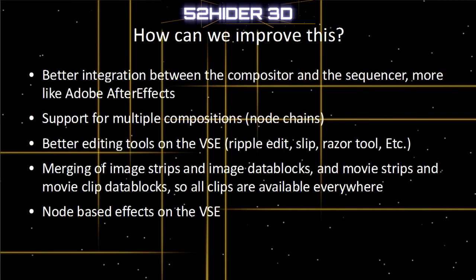Sorry if I'm putting things there that are actually already there. We could also have merging of image strips and image data blocks, and movie strips and movie clip data blocks, so all the clips are available everywhere. Currently if you load a strip into the video sequence editor, it's not the same sort of thing as you would load into the movie clip editor. And the same with image strips and image data blocks — they're not cross-compatible. If you bring an image into the video sequence editor, it's not instantly available in the UV image editor as a movie data block. That's just about making everything easier to use.